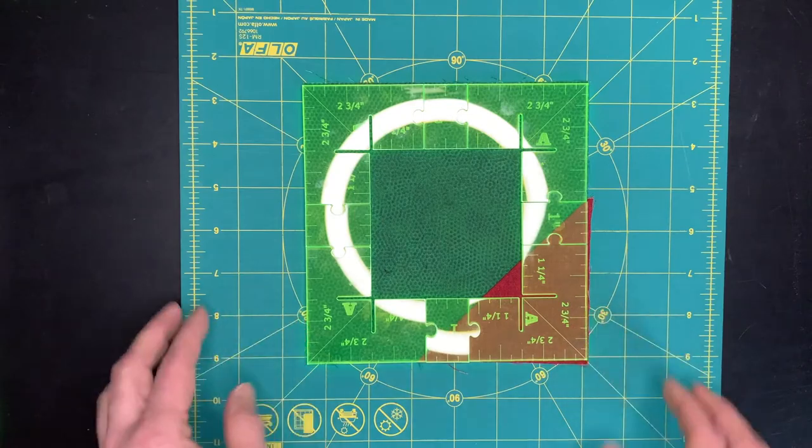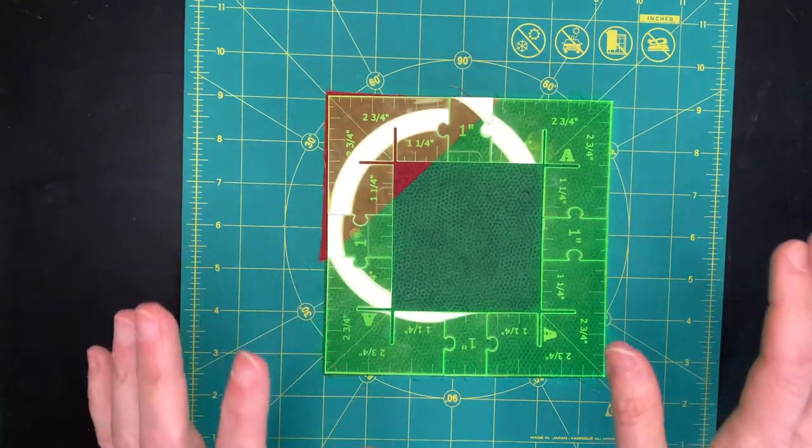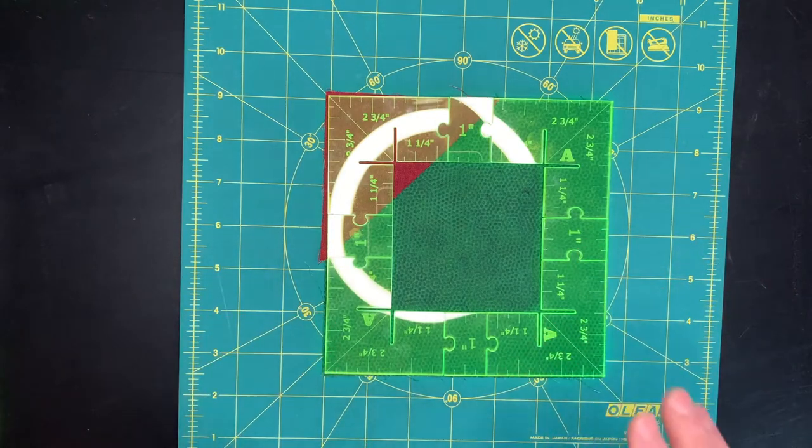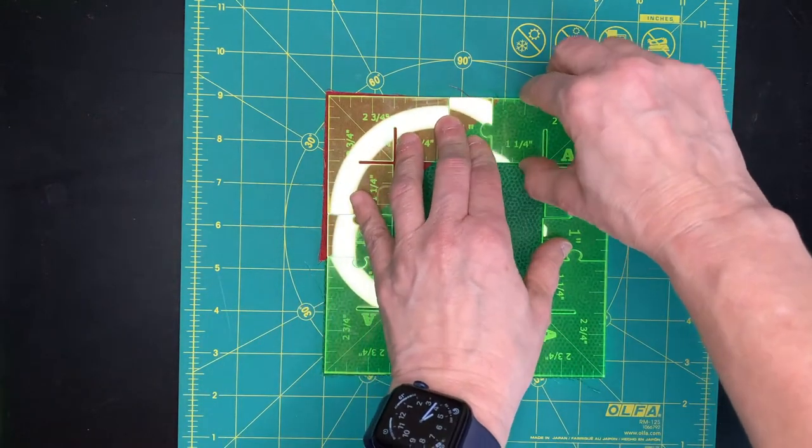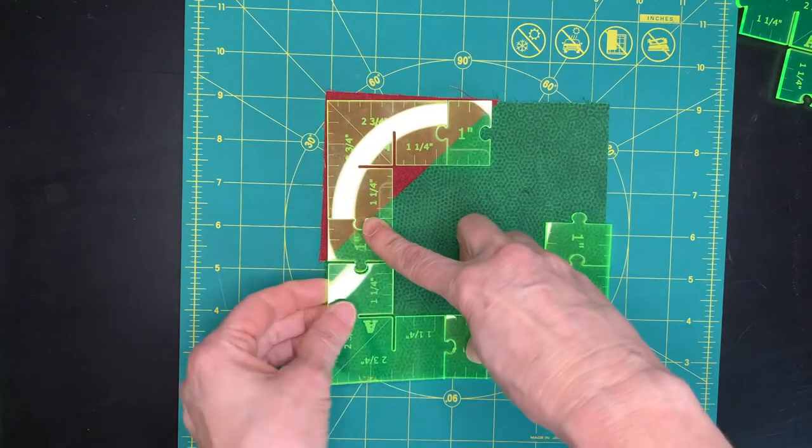What if I wanted to put this back? What if I wanted this to be a six and a quarter inch block instead of six and a half? It's easy to make that change. We just take out the A corners, two of the A corners.